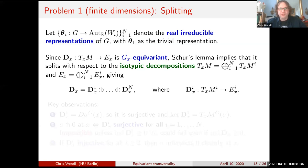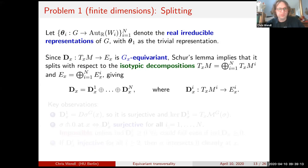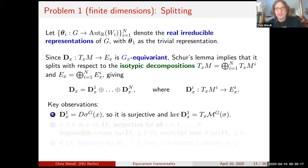This is the third ingredient: the splitting of the linearization. Choose a list of the real irreducible representations of G: θ₁ (trivial), and so on. Schur's lemma guarantees an equivariant linear map won't intermix different representations; it splits according to the isotypic decompositions of the tangent space and the fiber. For each irreducible representation there's a corresponding subspace on which G acts by a direct sum of copies of that irreducible. So we get a splitting of the linearization into a direct sum corresponding to the different irreducible representations.